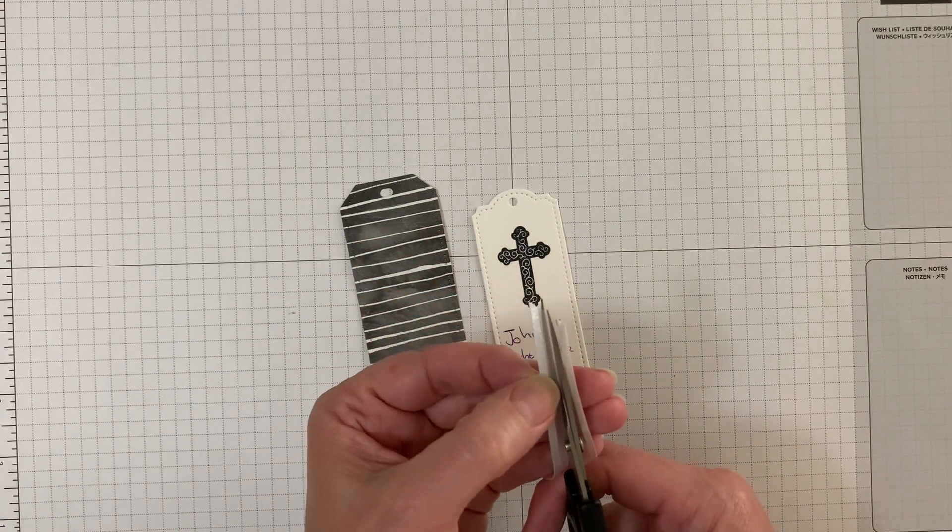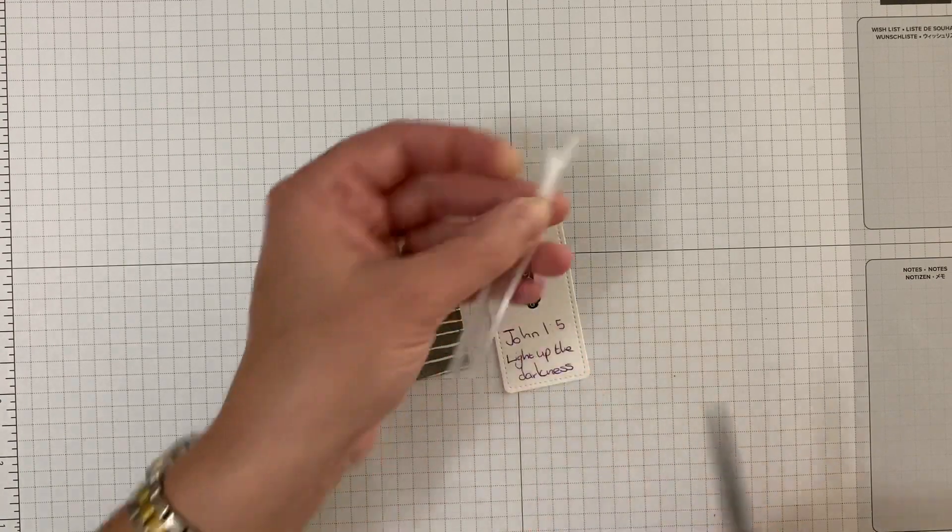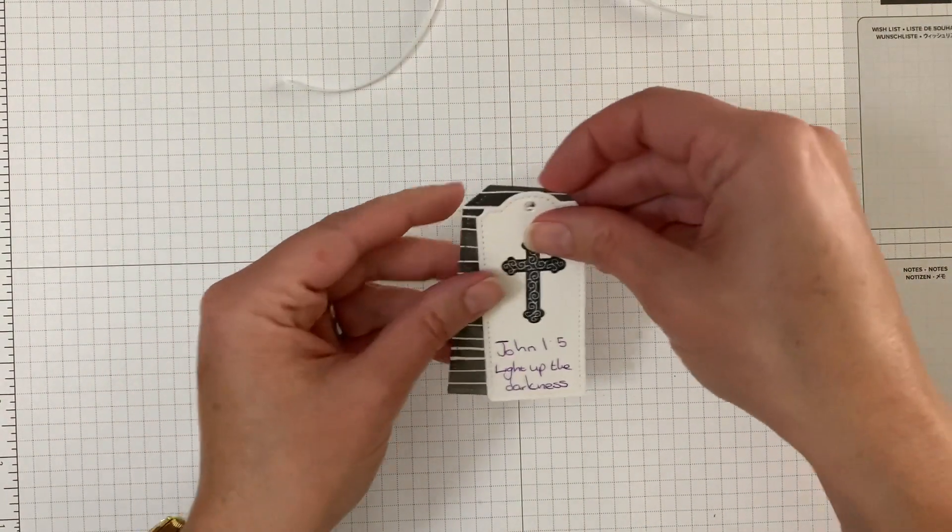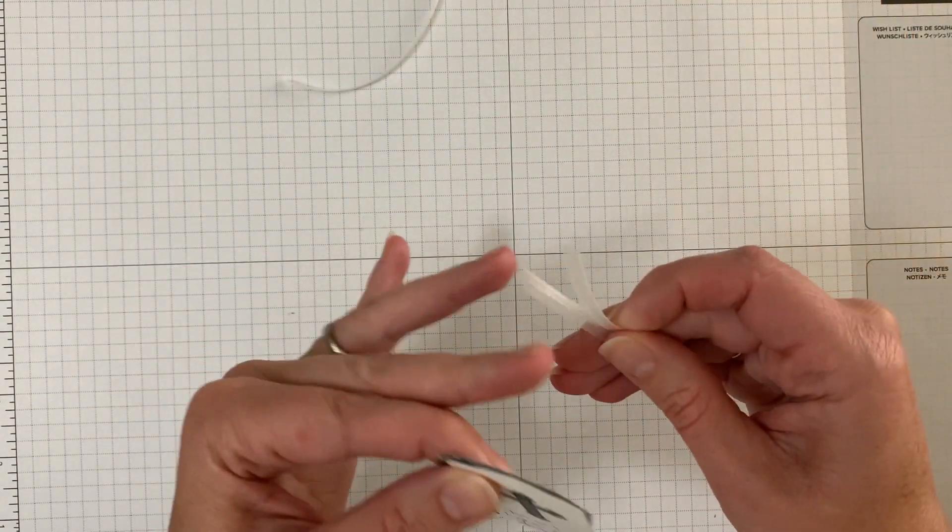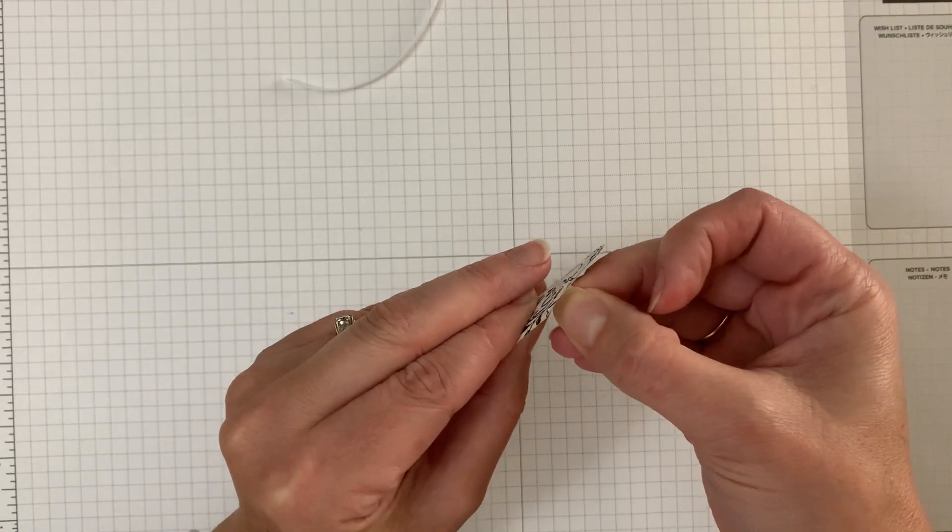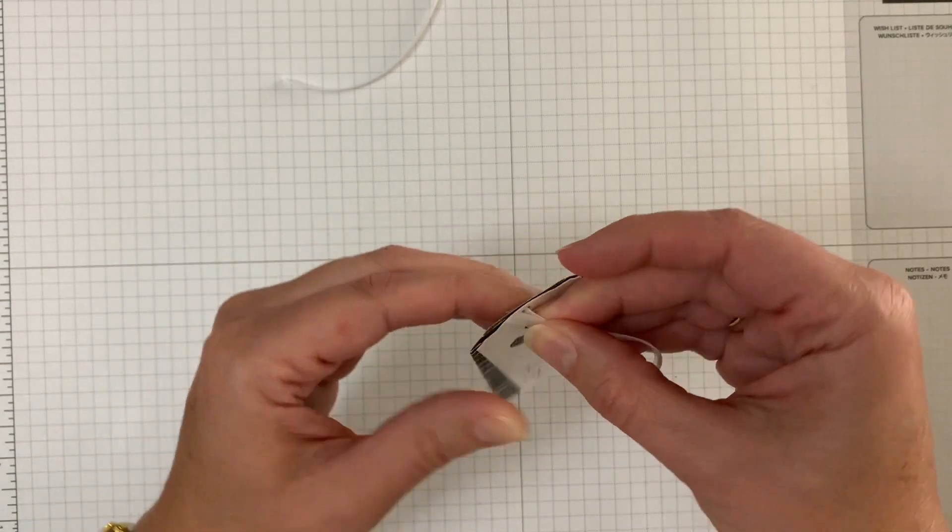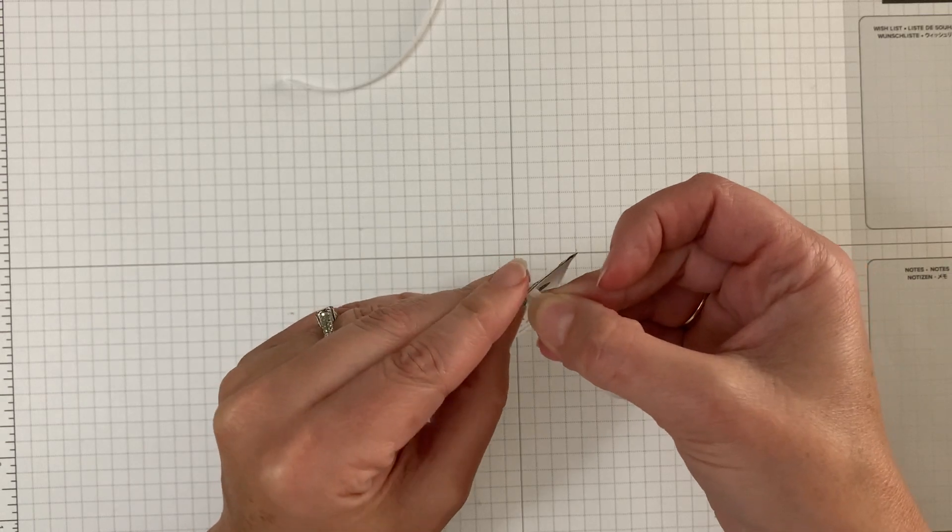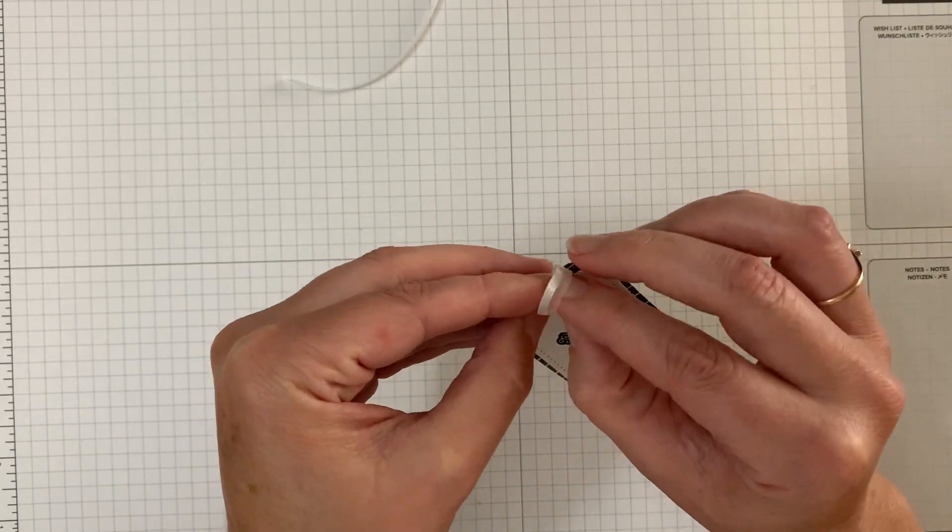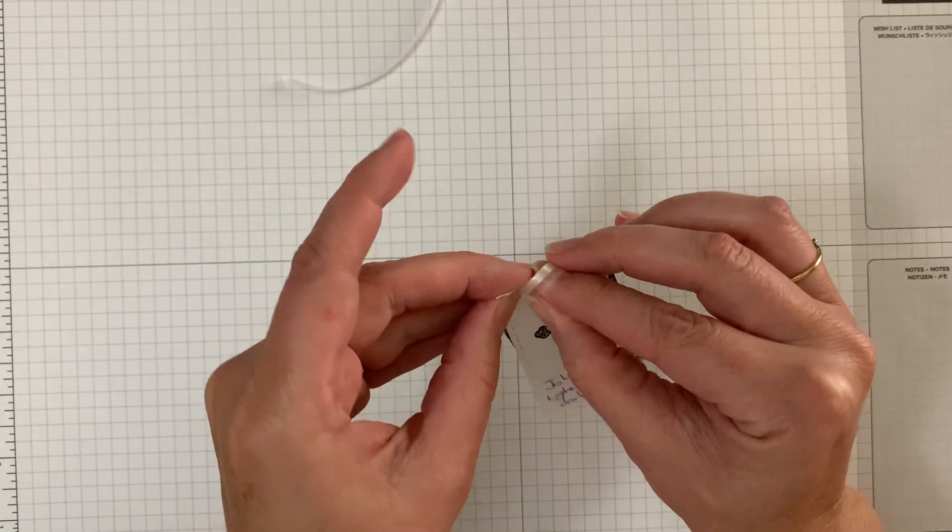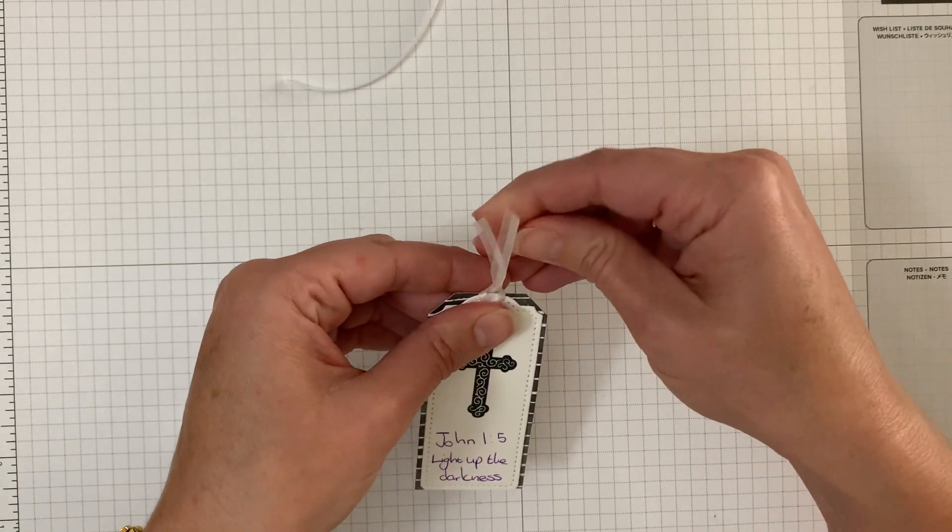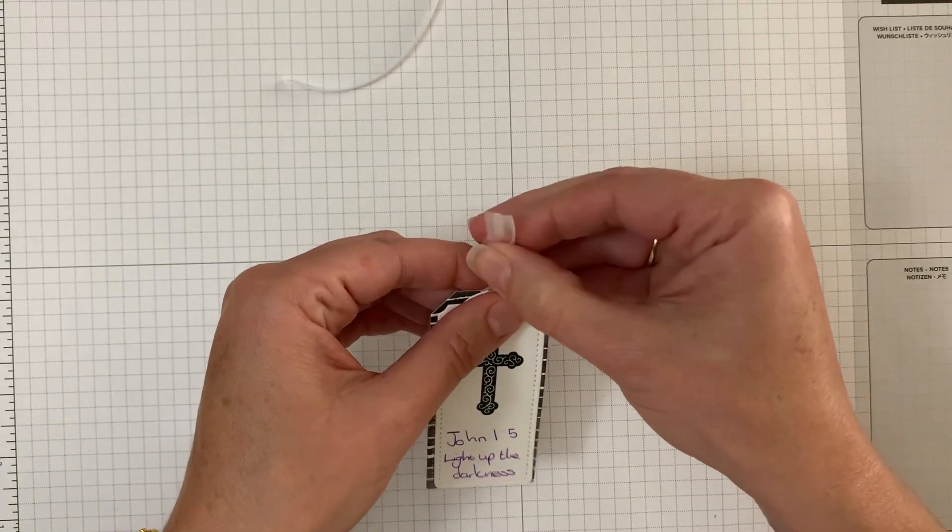You can use any of that. So I just stack them together, have the two ends like that, put them through both together. There you go. And then just grab your ends and pull it through the loop, pull tight, and that's that. You have a beautiful little bookmark or a gift tag.